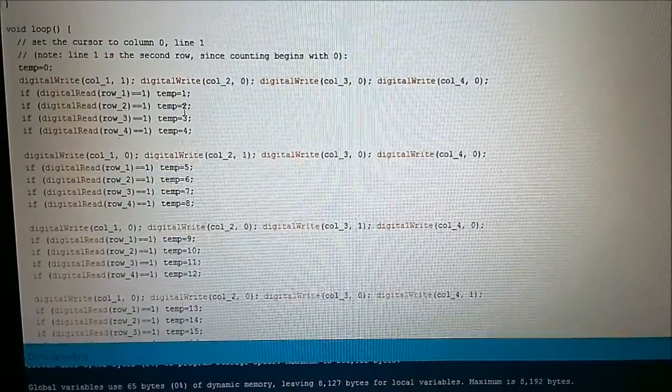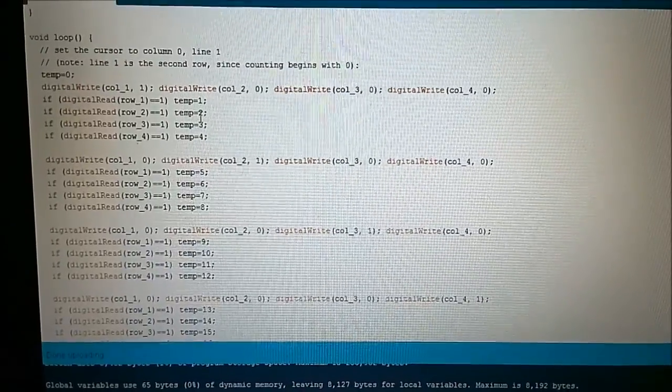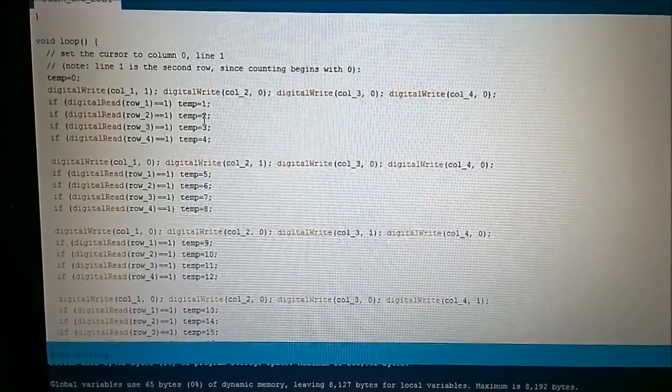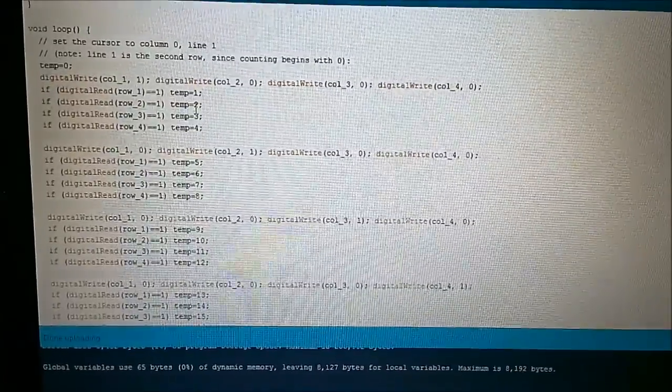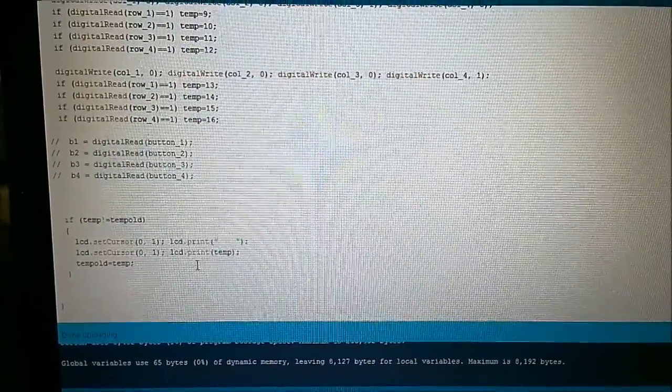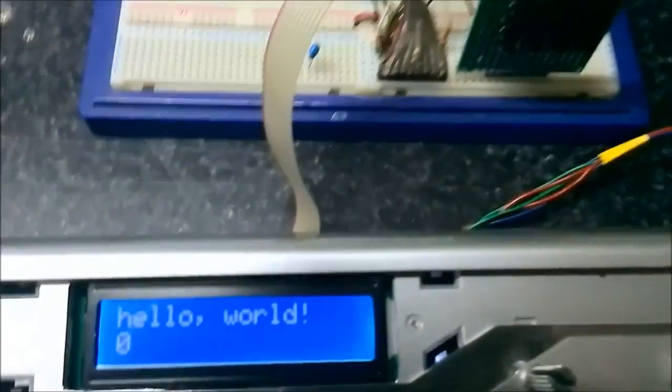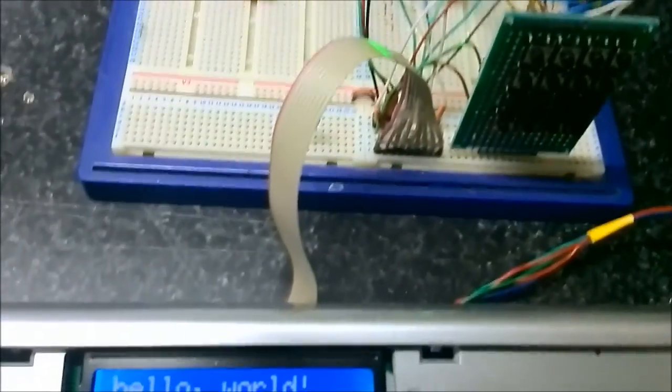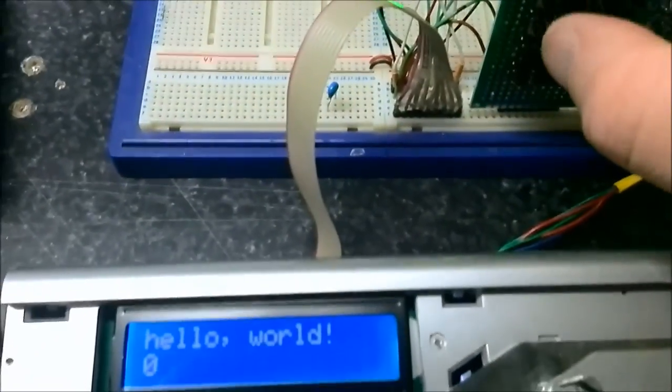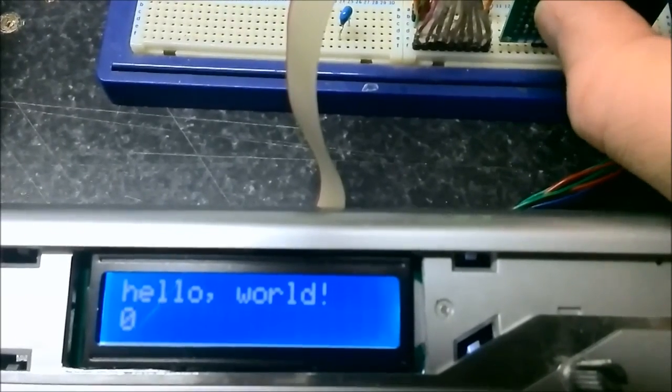Now I usually use a two-dimensional array to hold the values for this, but this is just a quick demonstration and I basically use the same code as before. Basically whatever's there is displayed. Now this has been set so when there's no buttons pressed it'll be a zero.